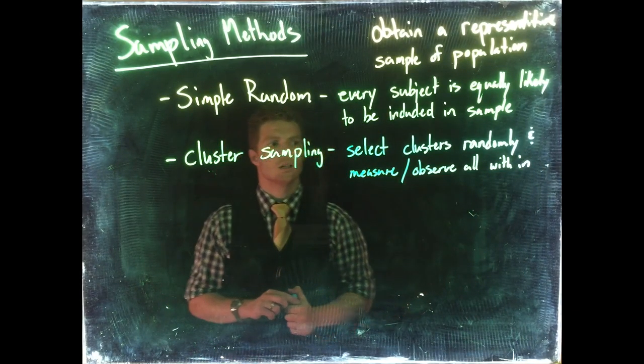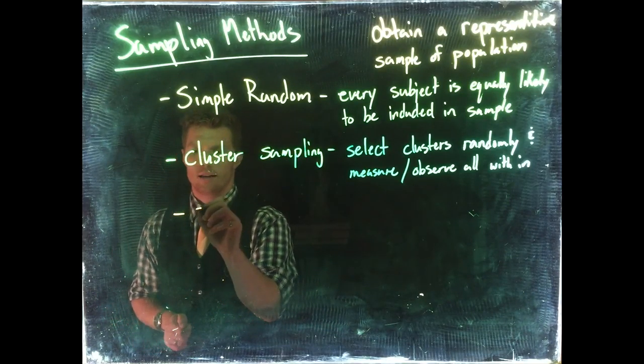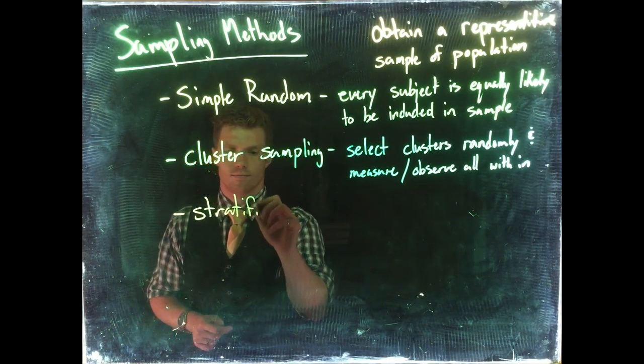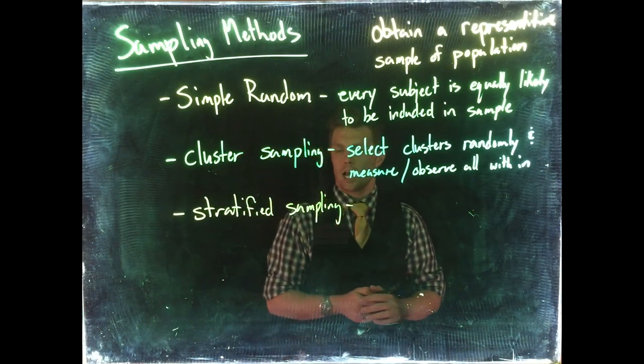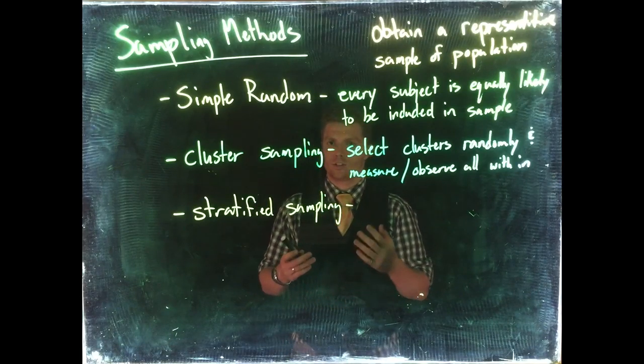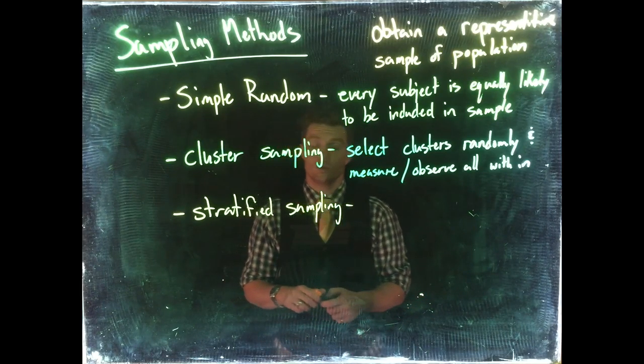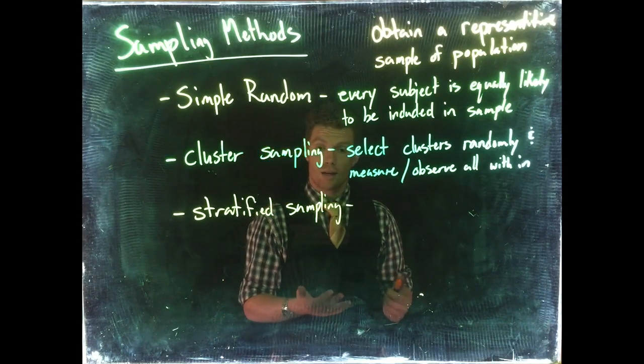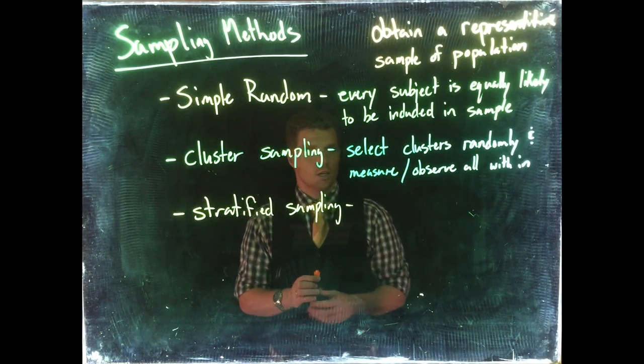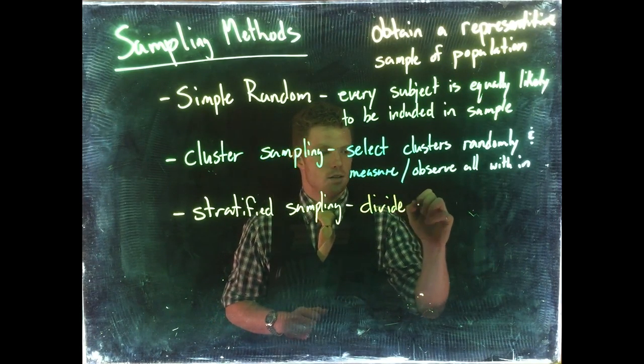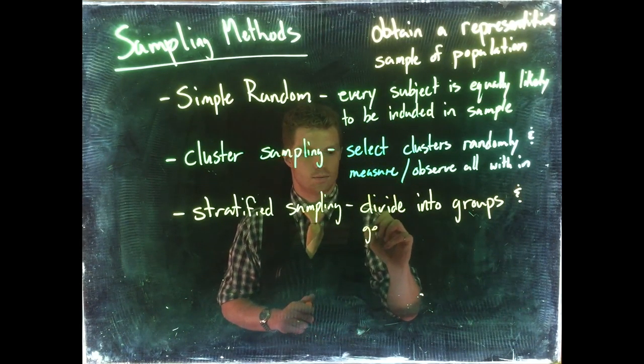There's a couple other good ones. Another one is stratified sampling. Stratified sampling would be like, we know that at Casper College there are 60% women and 40% men, so we would stratify our sample to make sure we got 60% women and 40% men. Here we would divide into groups and get fixed percent.